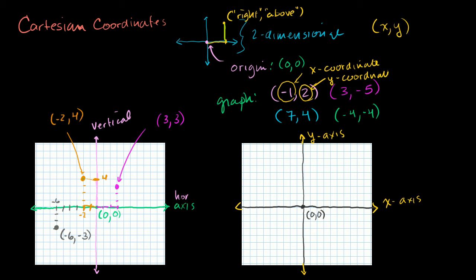So let's graph these points. The first one is minus 1, 2. We're 1 to the left — that's what the minus tells us — so we go 1 to the left. That's our x-coordinate of minus 1. And then we go positive 2, that's our y-coordinate, so 1, 2 up. So the point minus 1, 2 is right there.